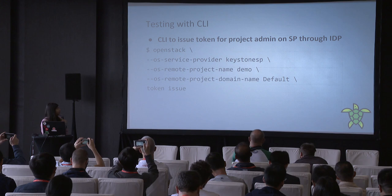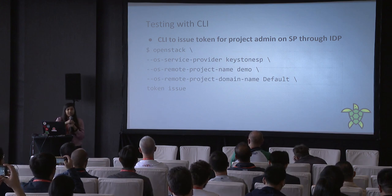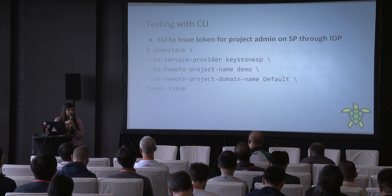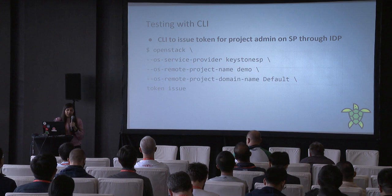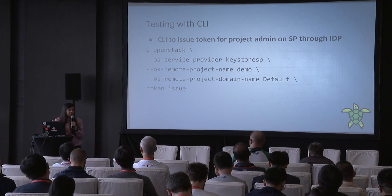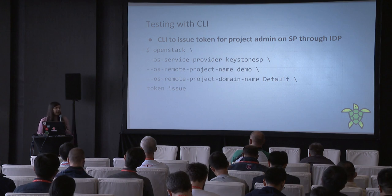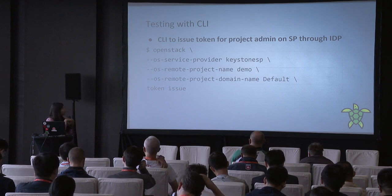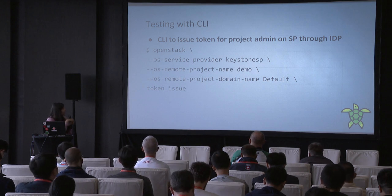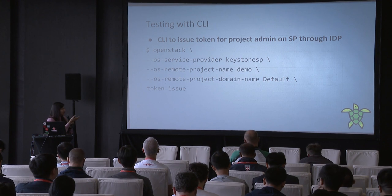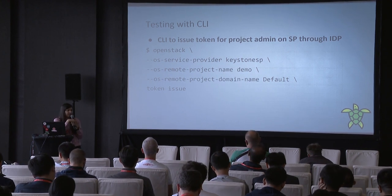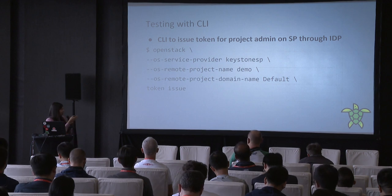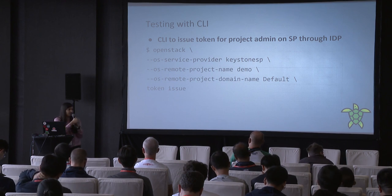We can now test our setup. That was the very basic configuration shared here. There is a lot more configuration that needs to be done — the link will be shared where you can read more about federation and the required configuration. After all the configurations, we can use the CLI over the identity provider, passing the service provider name for an instance created on the IDP named Keystone SP, to issue the token needed to access those services.